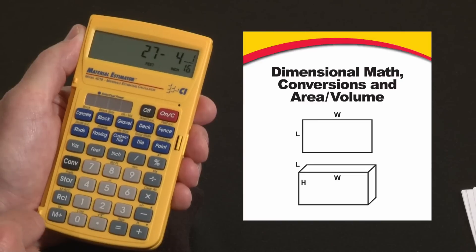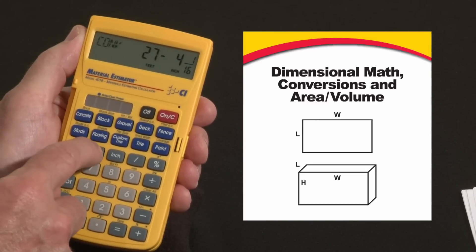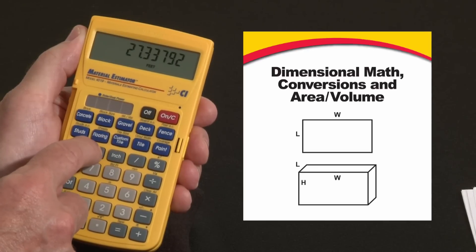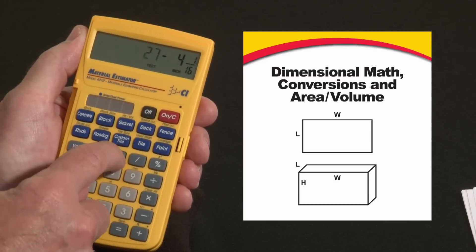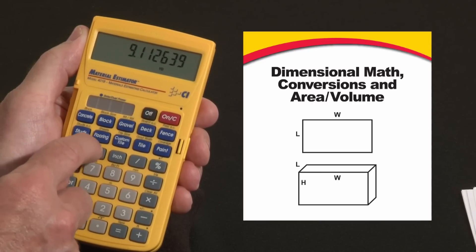When you hit the equals, it'll come back to the format we started with - feet, inch, fractions. But if you like another format, just hit convert. Feet - there it is in tenths and hundredths. There it is back in feet, inch, fractions. Inches and fractions, inches decimal, yards, back to feet.